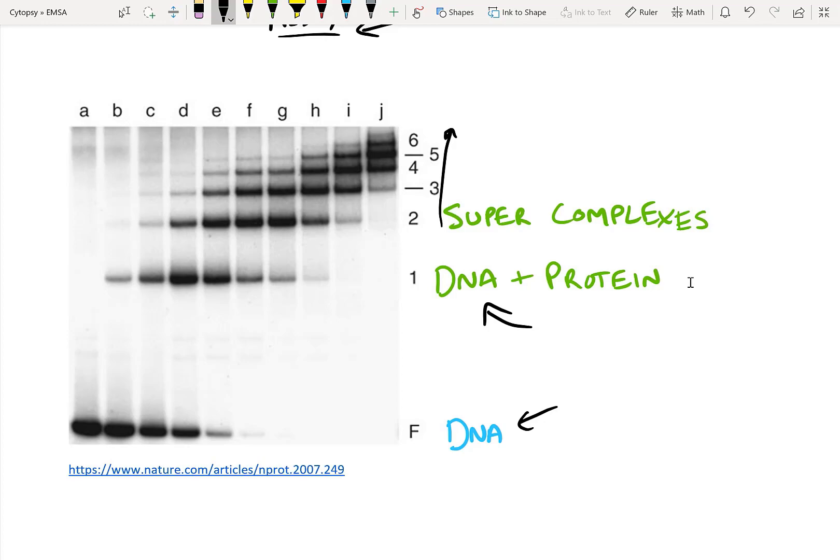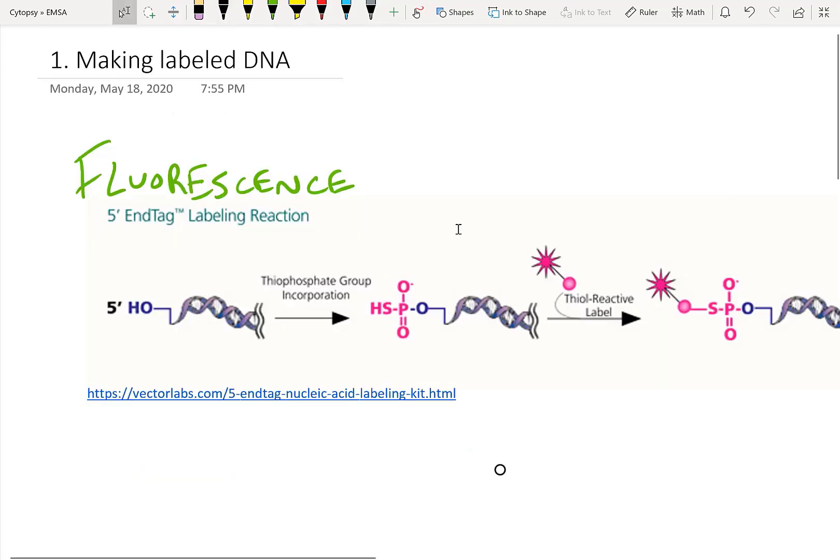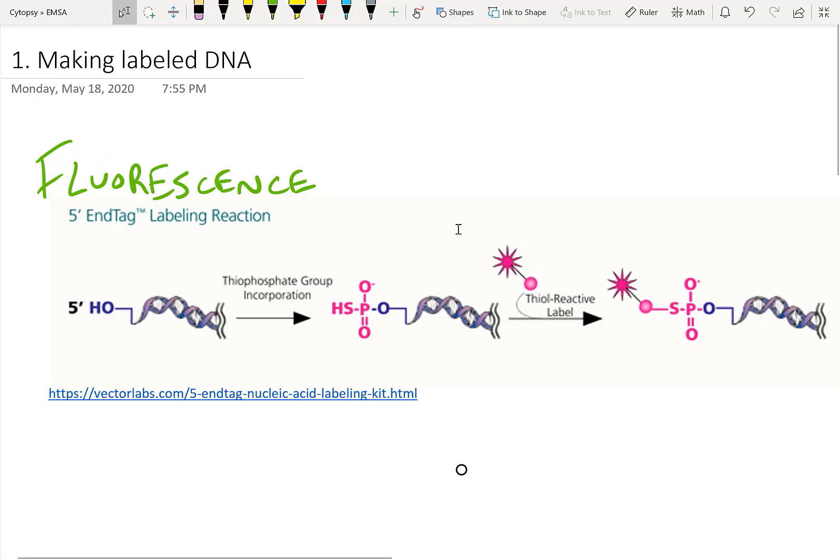You might be wondering how do you actually do all of this. We're going to go through a protocol here by nature protocols and see how you actually conduct an EMSA step by step. So the first step of EMSA is making some kind of labeled DNA. In EMSA, you have to be able to detect your DNA in your gel using some method. I'm going to be presenting the different kinds of methods you could use.